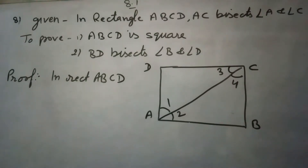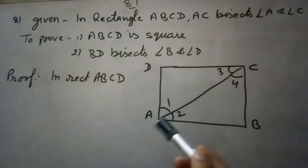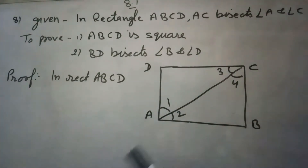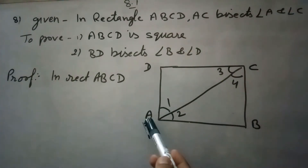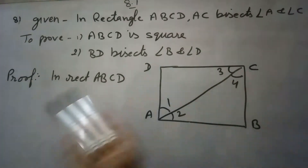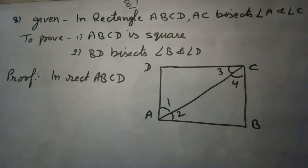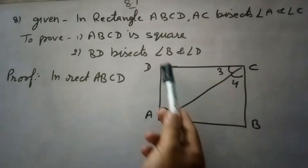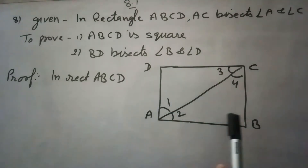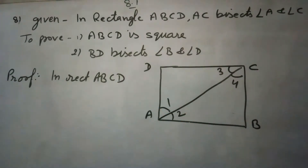In this question it is given that ABCD is a rectangle where AC bisects angle A and angle C. We need to prove that ABCD is a square and BD also bisects angle B and angle D.